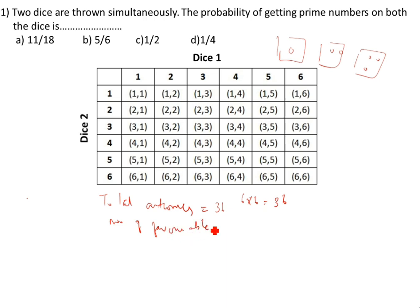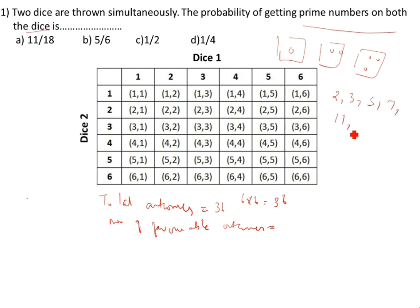Now, number of favorable outcomes. What is the question asking? Prime numbers on both the dice. The prime numbers are: 2, 3, 5, 7, 11, 13, 17, 19. Prime numbers are not divisible by any other number — for example, 3 and 11 are not divisible by any other number.